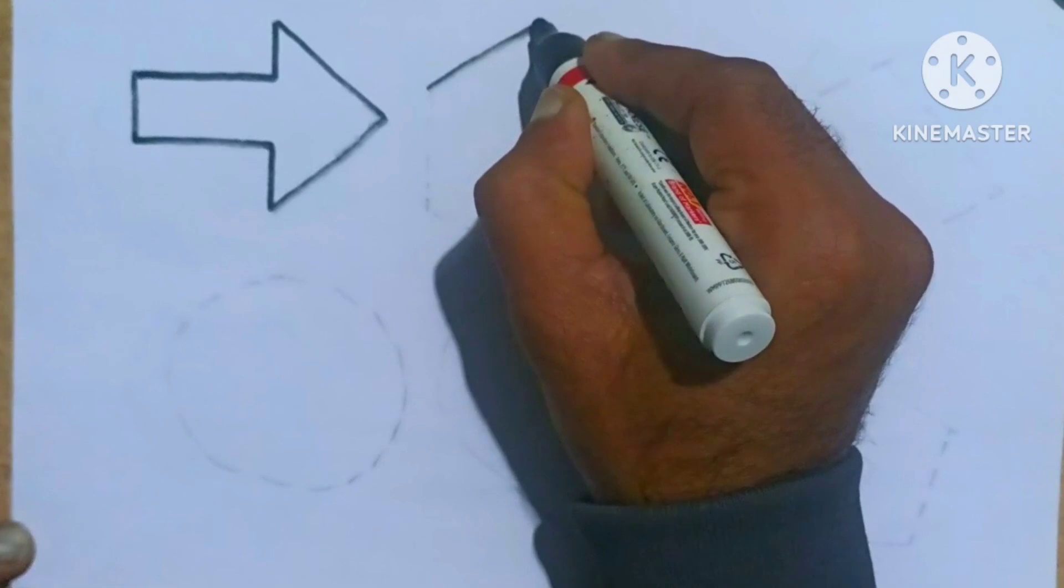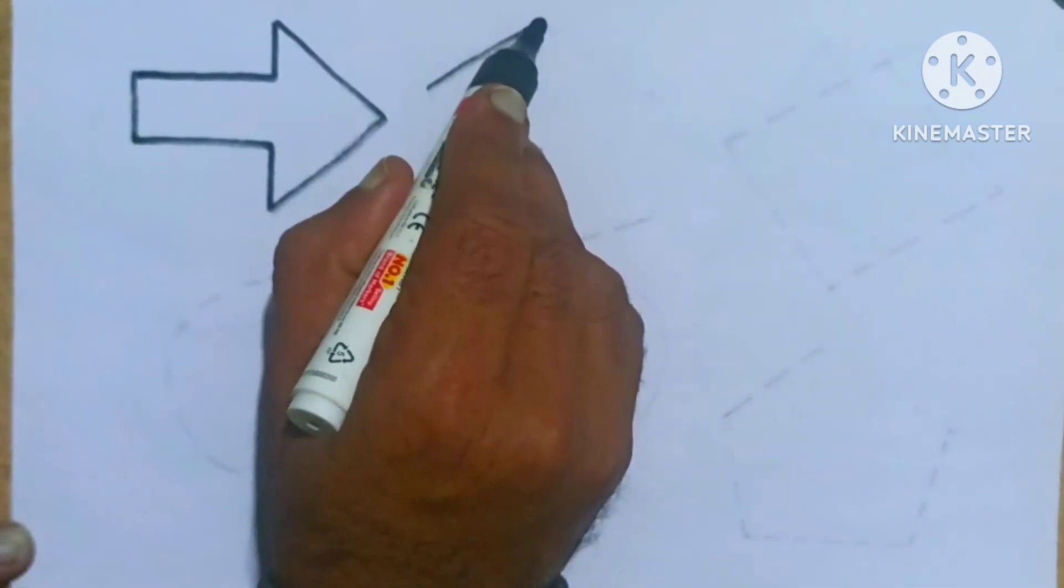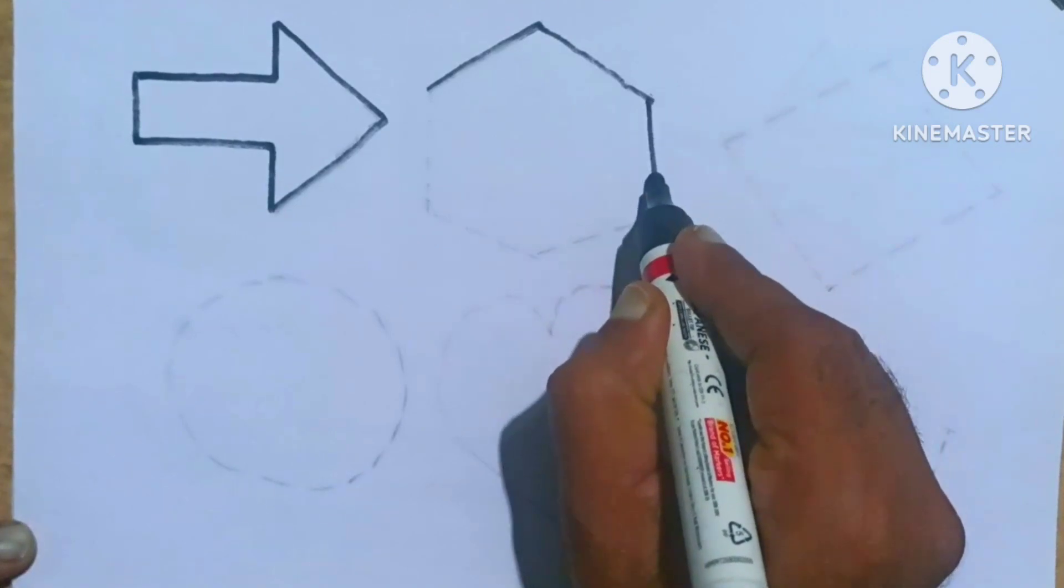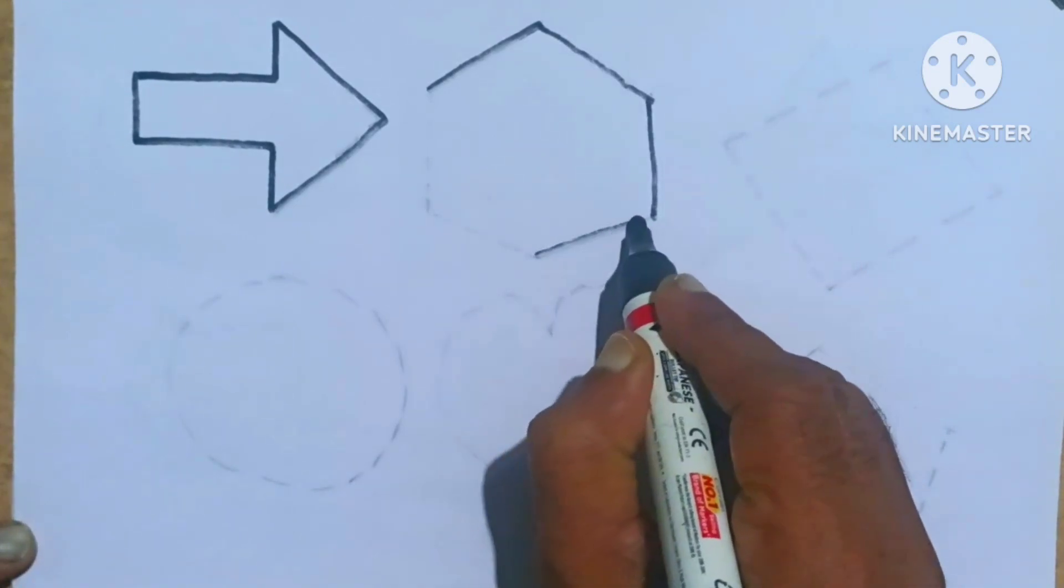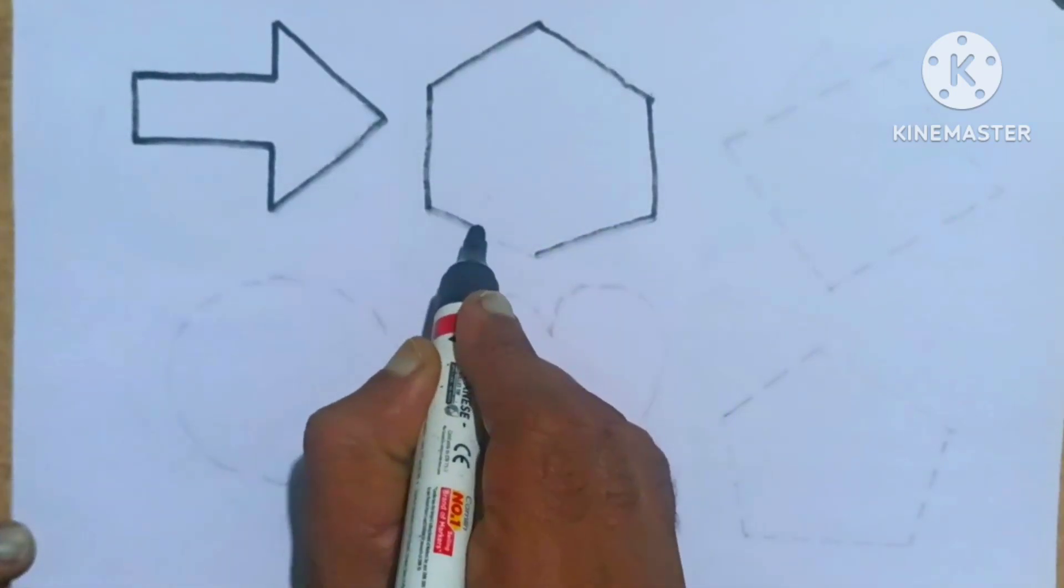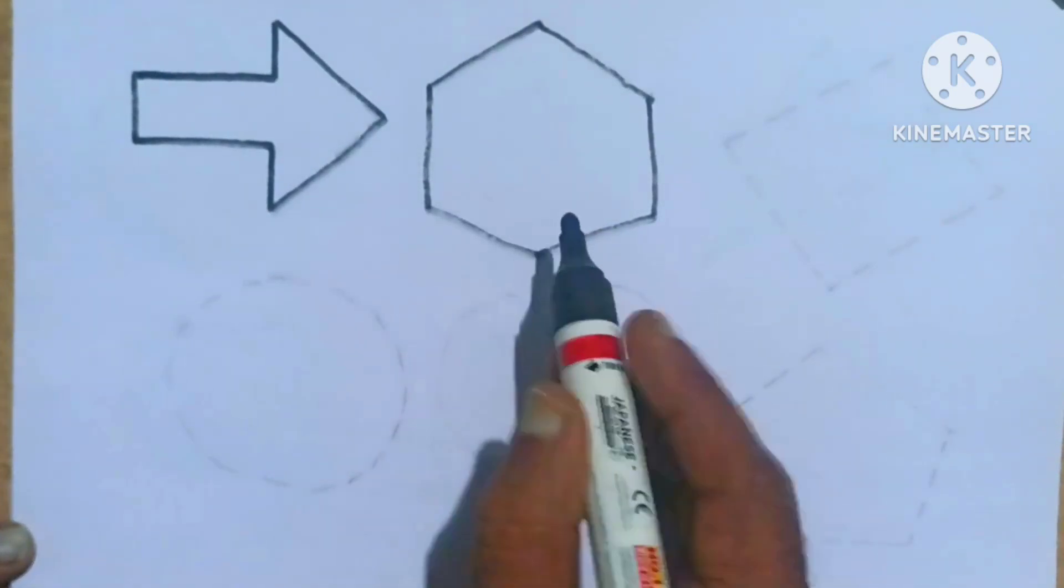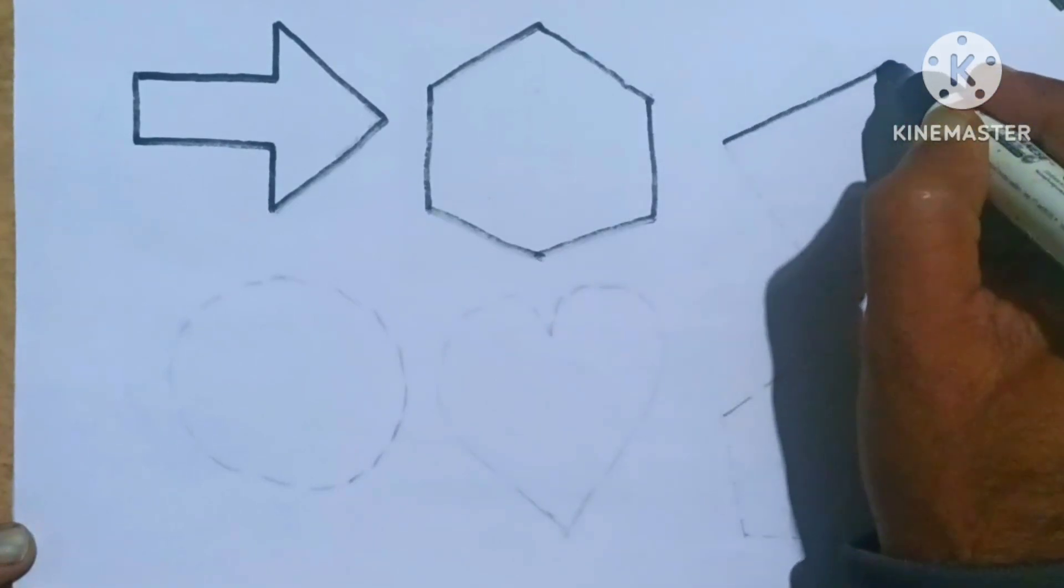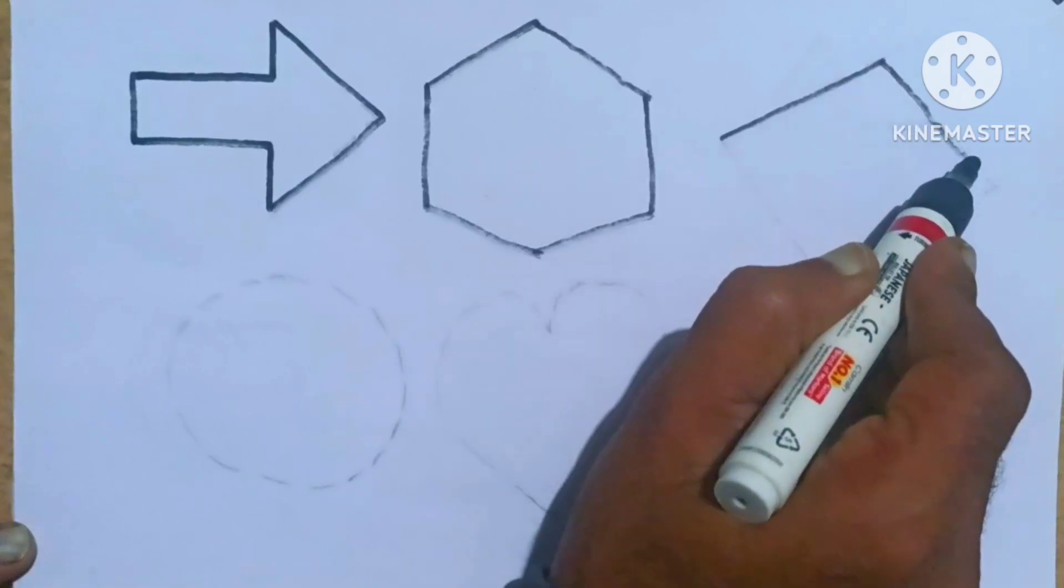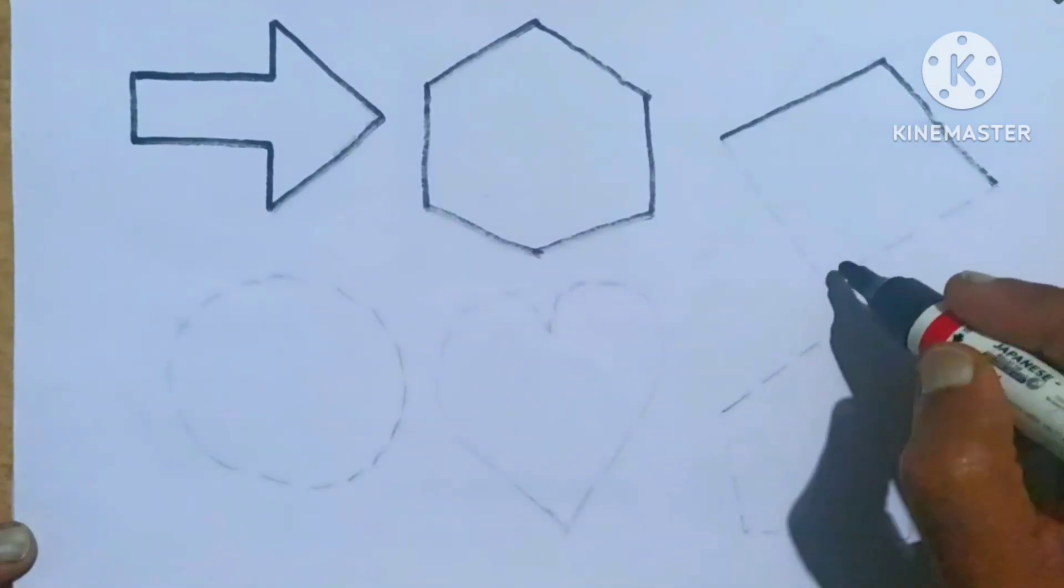Hexagon. Which shape? It's a hexagon shape. Rhombus shape kids, which shape? It's a rhombus shape.